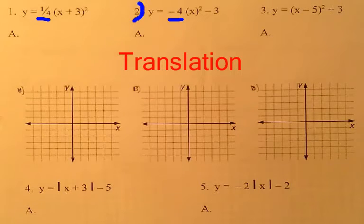This one right here is upside down because of the negative form. The number inside the parentheses moves it left or right, and the number outside the parentheses, like this guy here, moves it up or down.